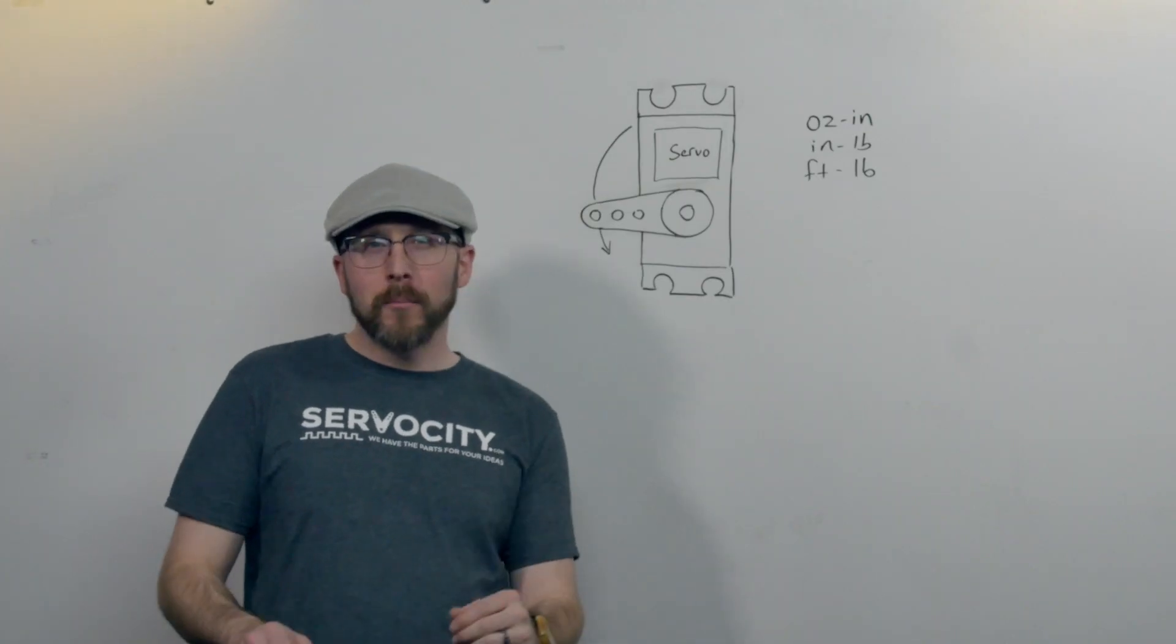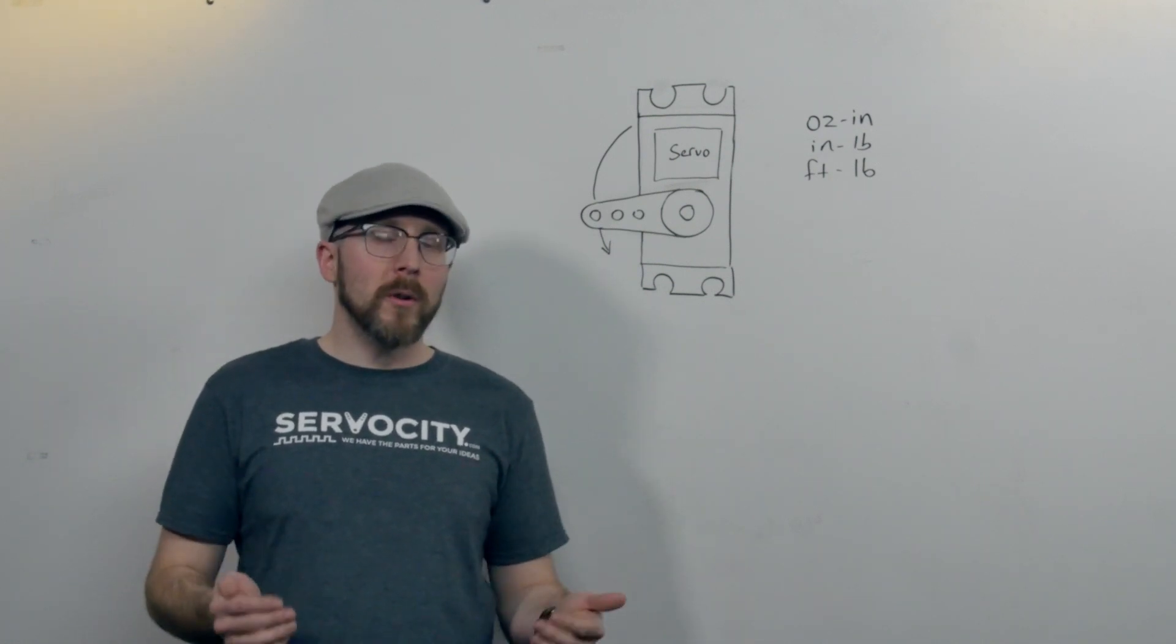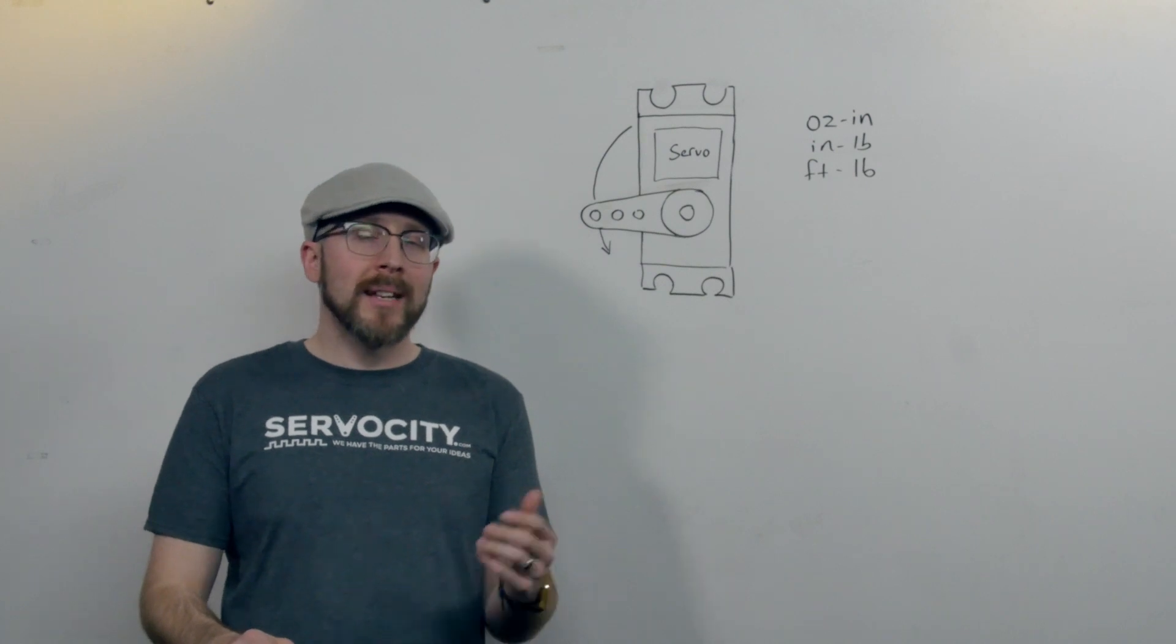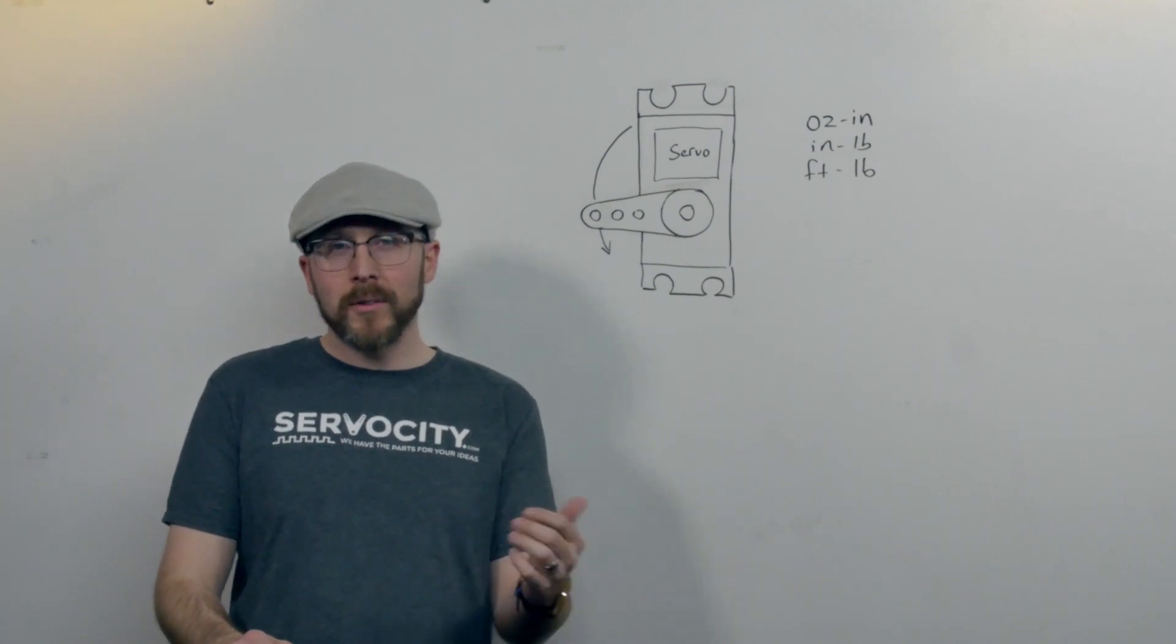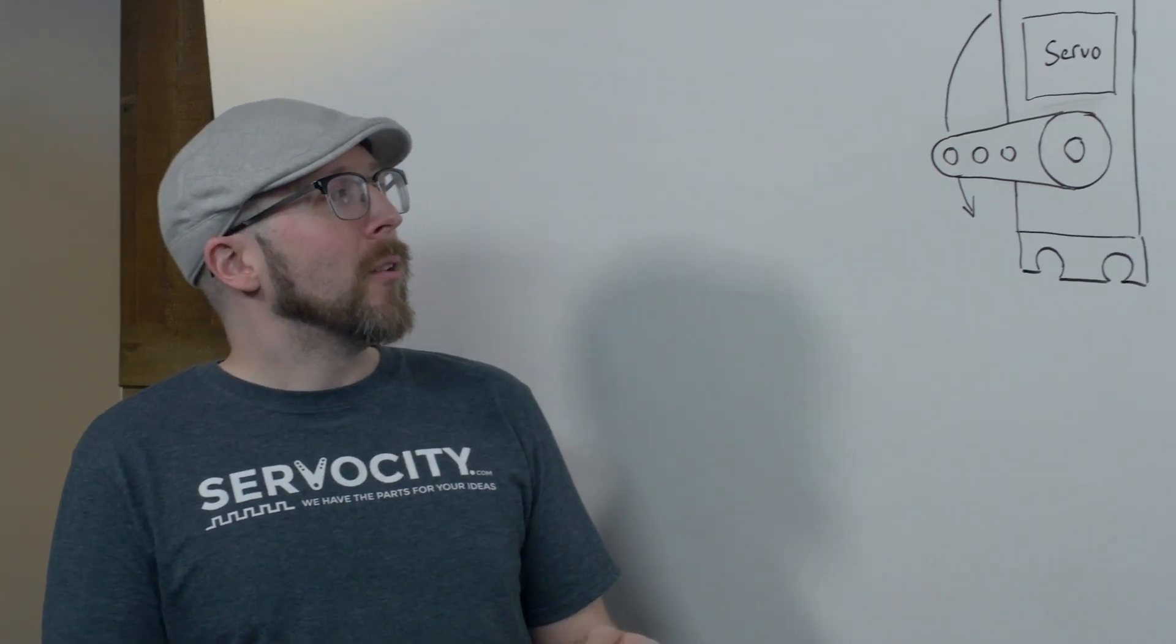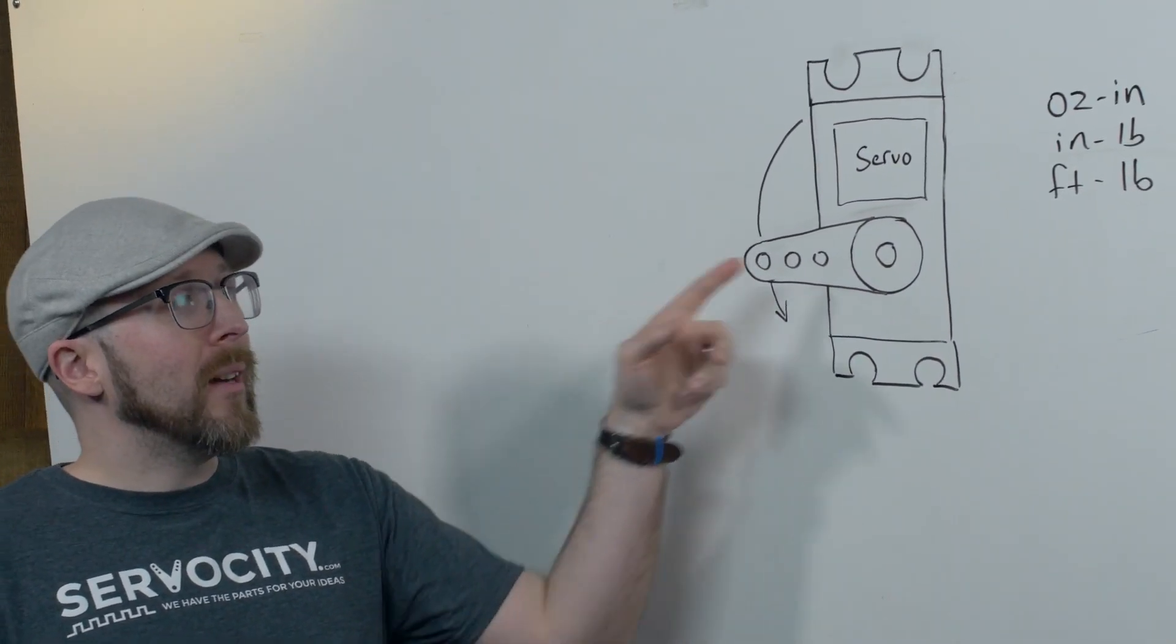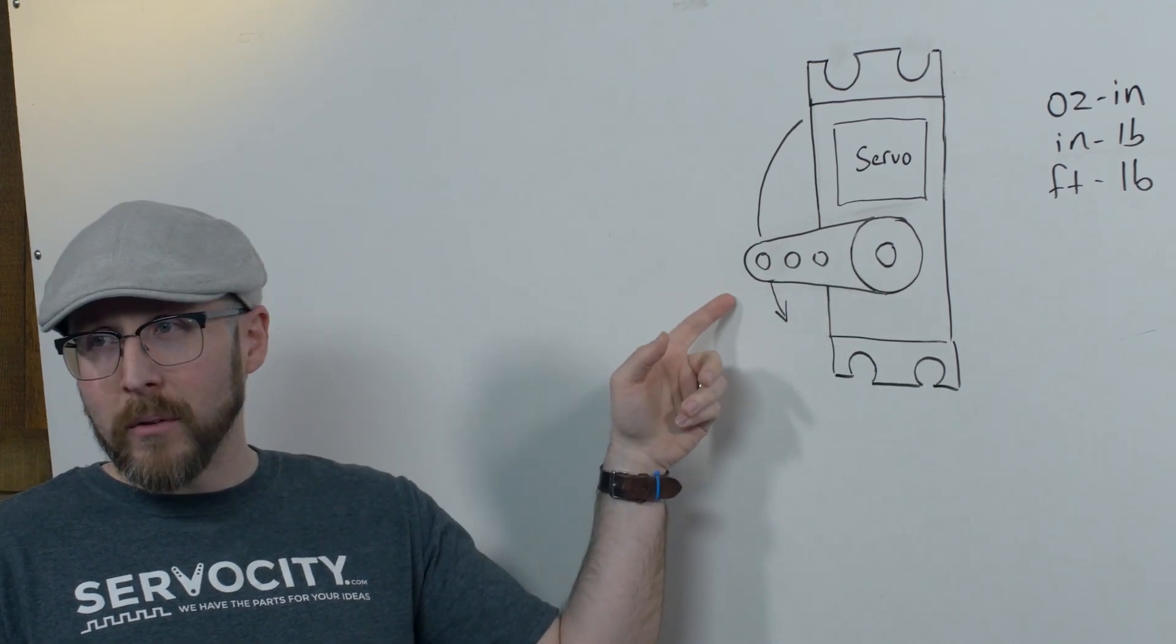You may notice that all these units of measurement are a combination of both length and load, and it doesn't matter which one goes first. So ounce-inch is the same as inch-ounce, and essentially what that means is you're applying one ounce of load one inch away from the center of rotation.